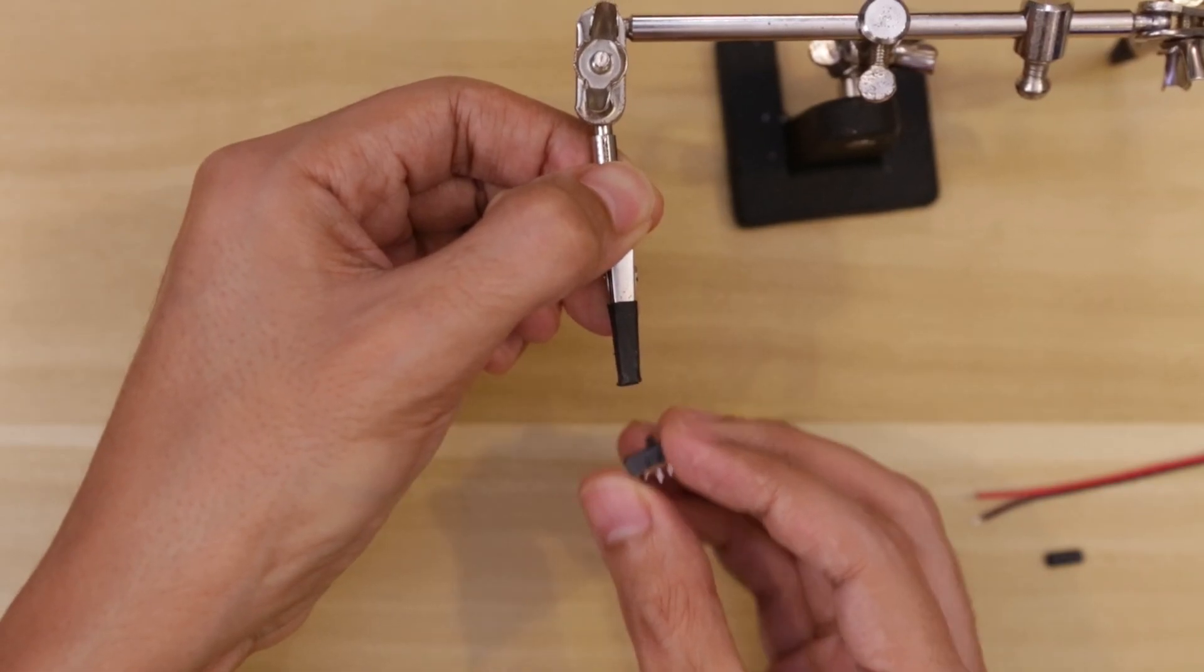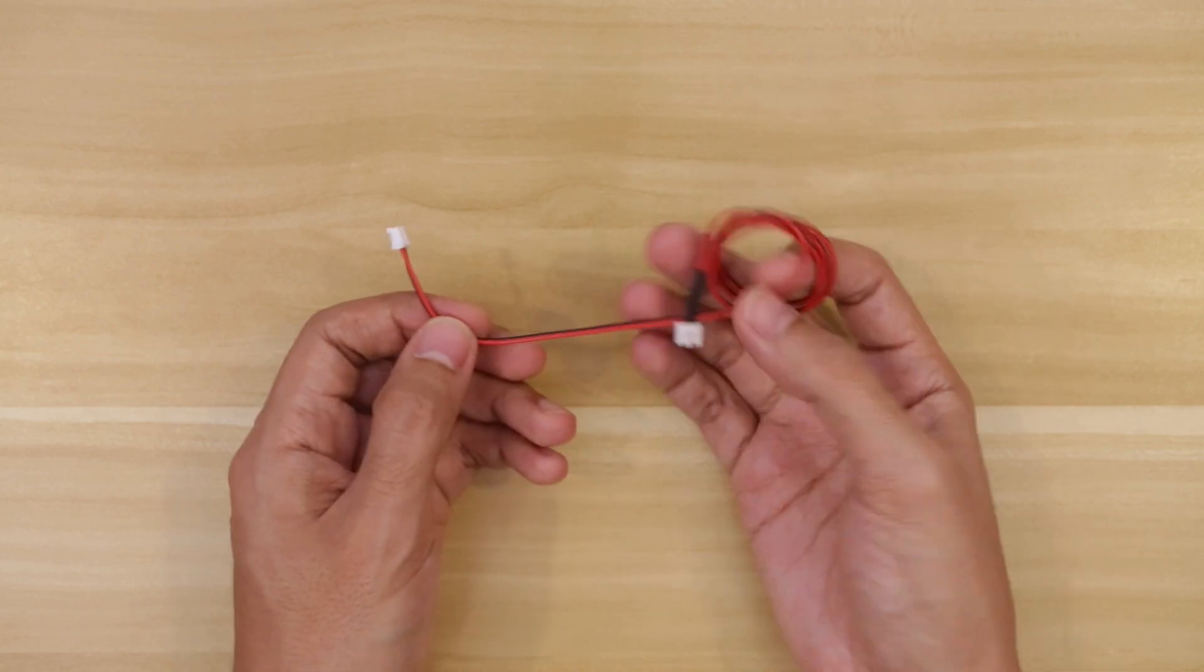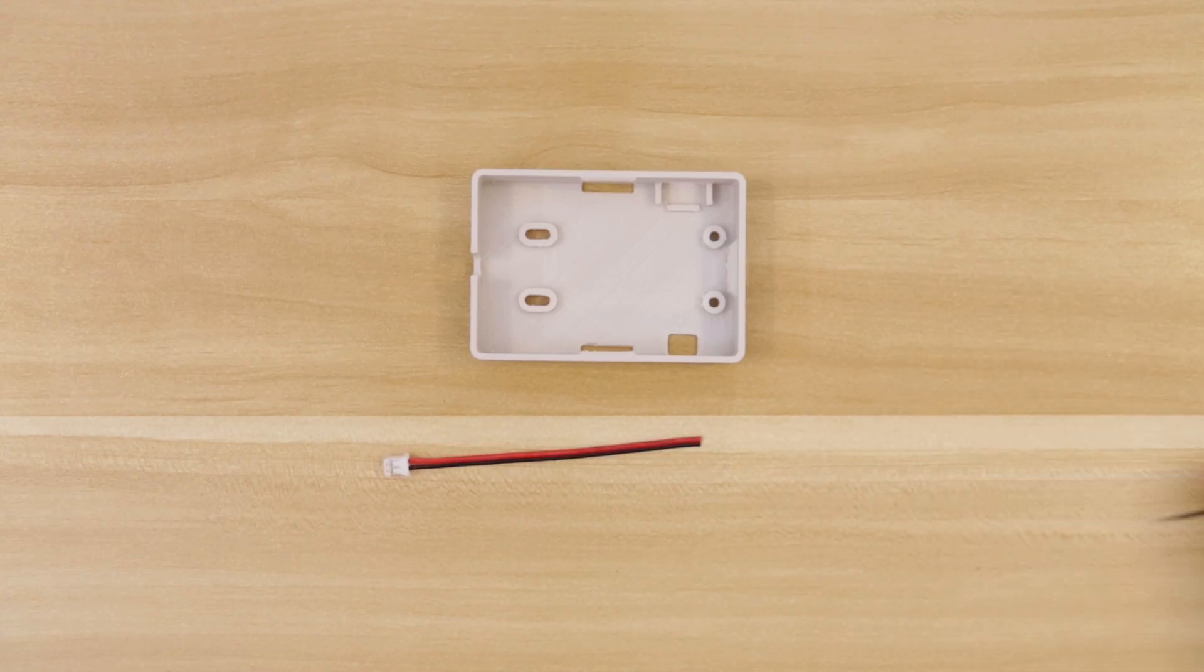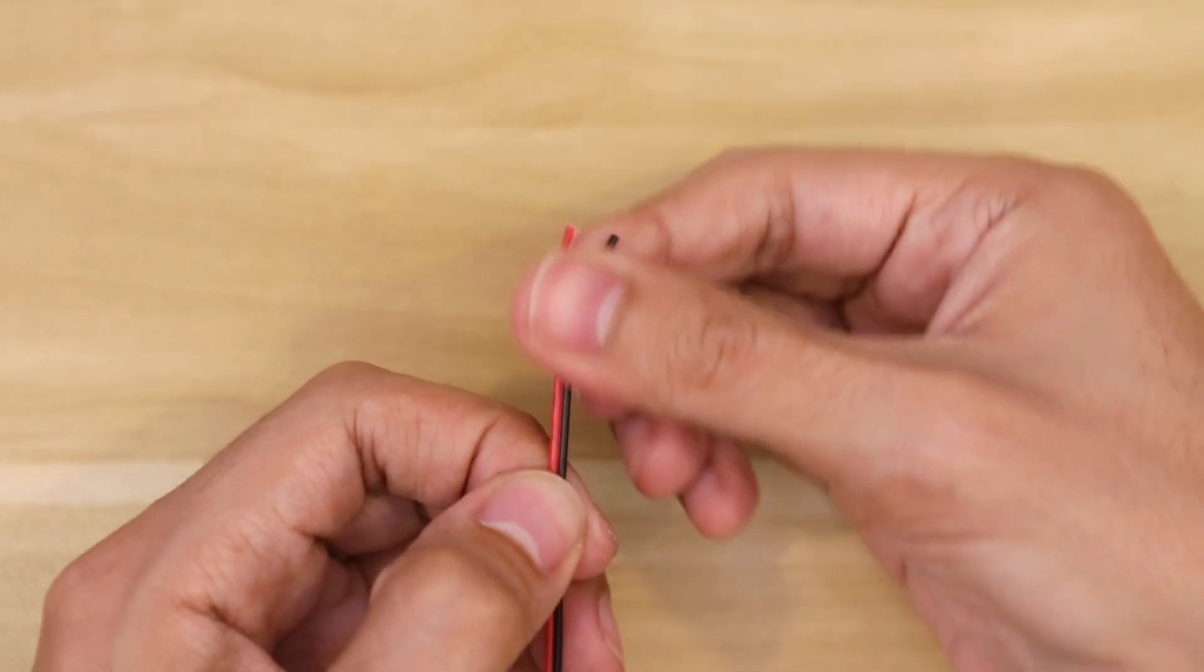And with that we can move on to the JST cable. The JST extension cable is lengthy so we'll need to cut it down to size. I normally make the length the same size as the project enclosure. Then I'll split the voltage and ground wires apart because we'll need to wire them to separate connectors.